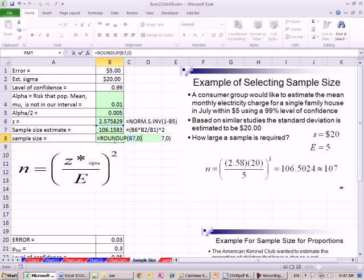Now we did this calculation in a separate cell. You certainly don't have to. You could do it all in one cell if you'd like. So there's our estimate for our sample size, 107.